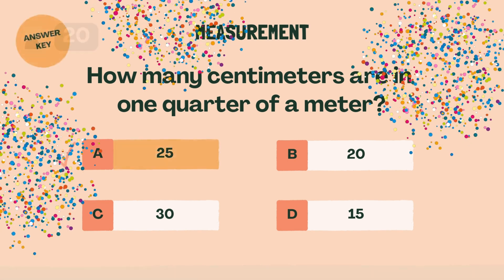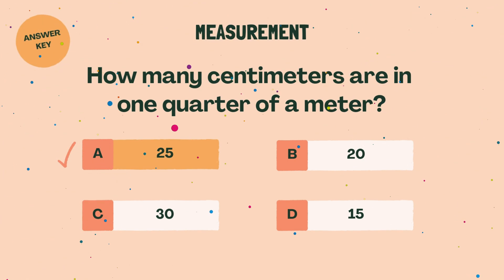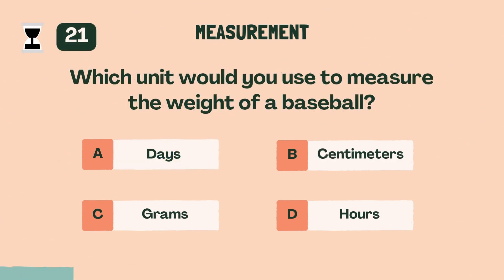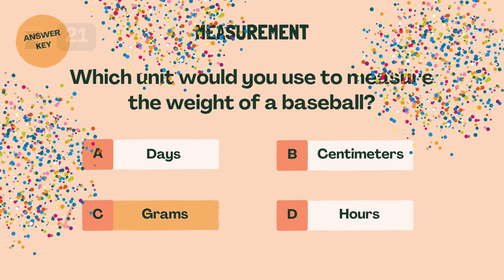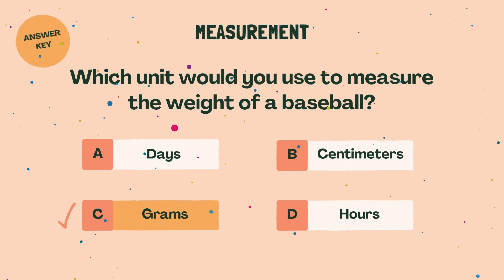How many centimeters are in one quarter of a meter? A. 25. Which unit would you use to measure the weight of a baseball? C. Grams.